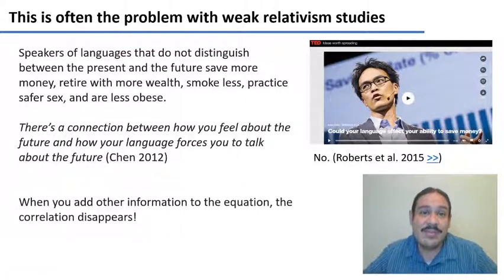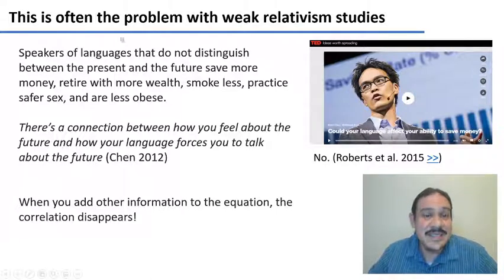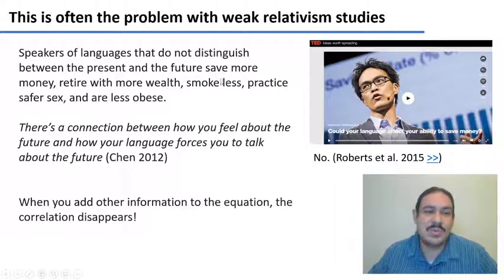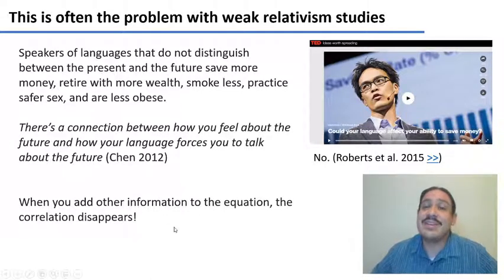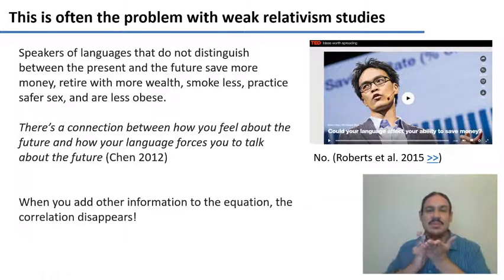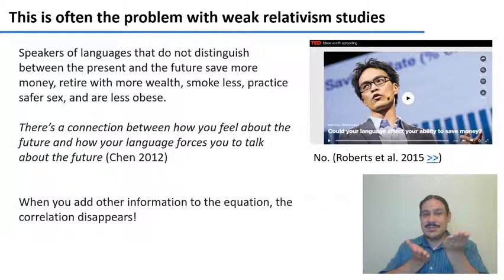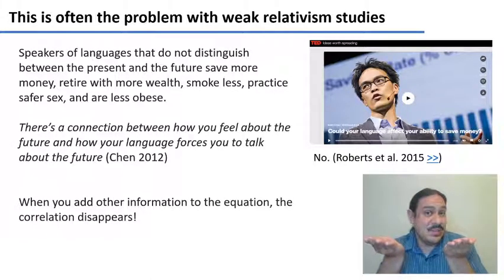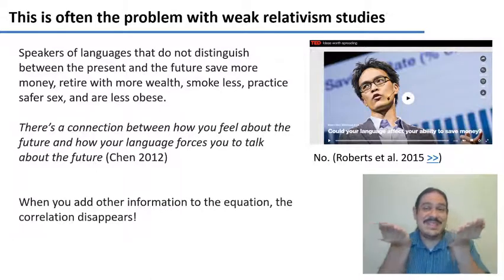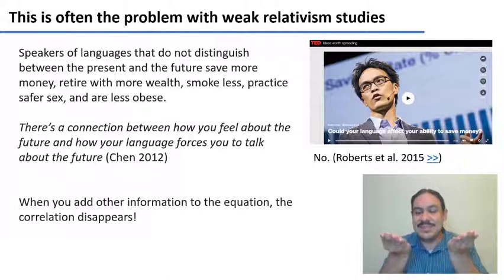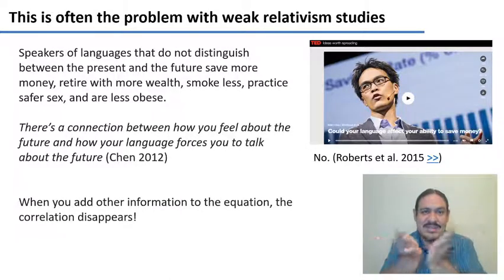These studies all have these weaknesses. The original study by Chen (2012) did say that speakers of languages without a morphological future tense save more money, retire with more wealth, smoke less, practice safer sex, and are less obese — a tantalizing story. But when you take other things into account, like whether English-speaking countries simply have more wealth regardless of their future tense morphology, the idea that future tense correlates with saving money starts to dissolve. It's just other factors confounded with language.